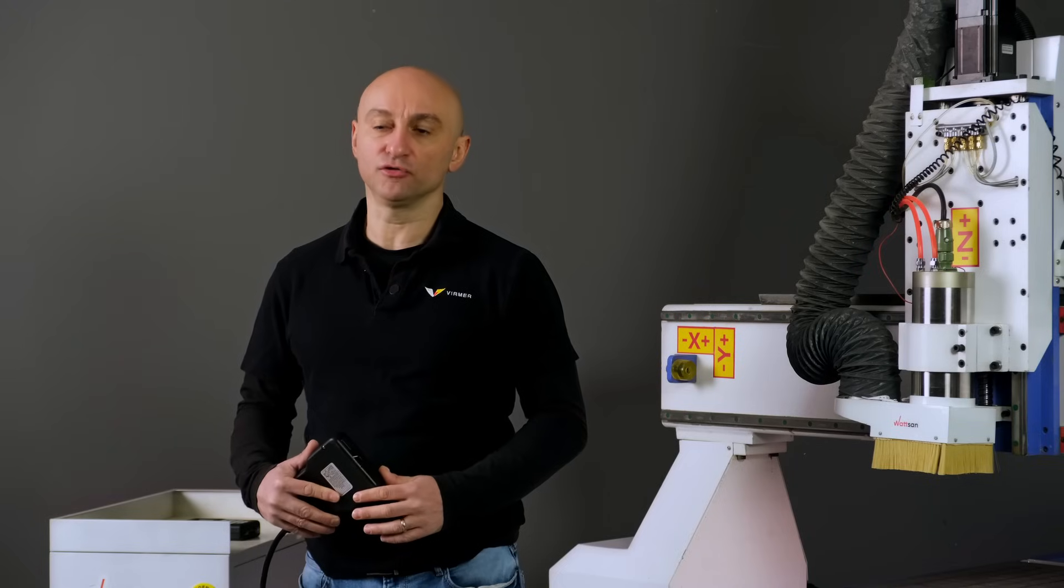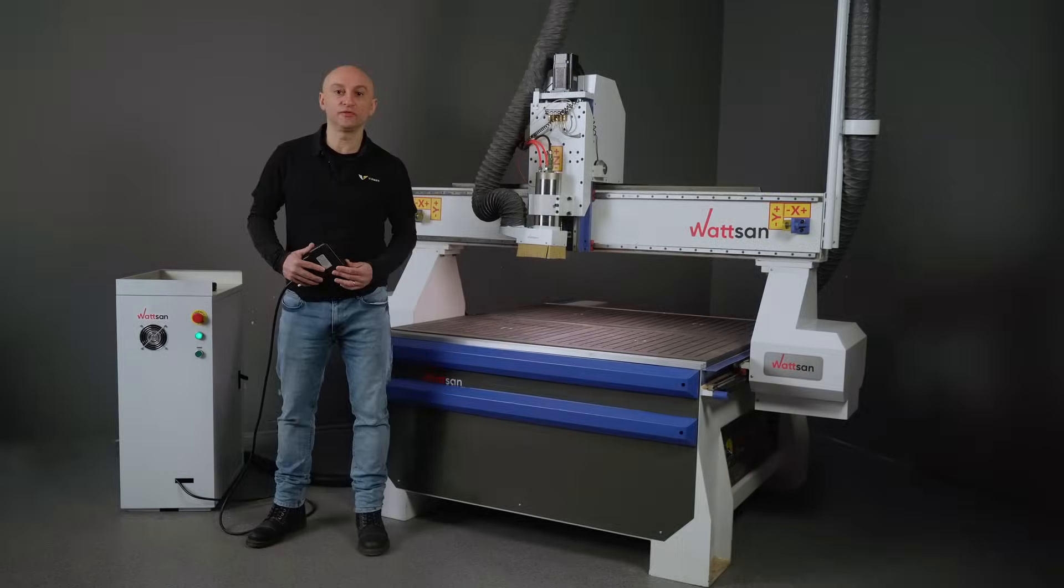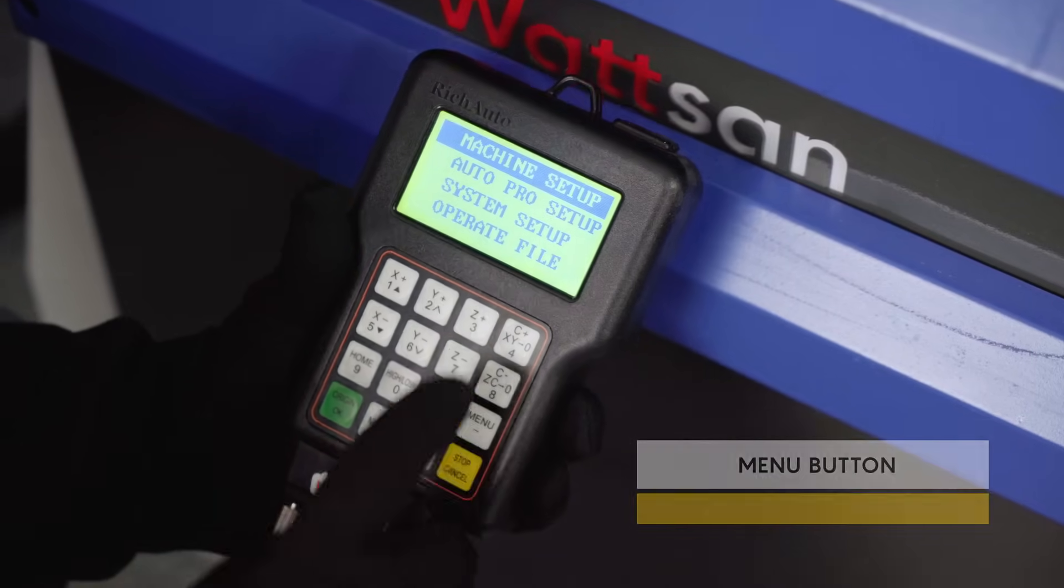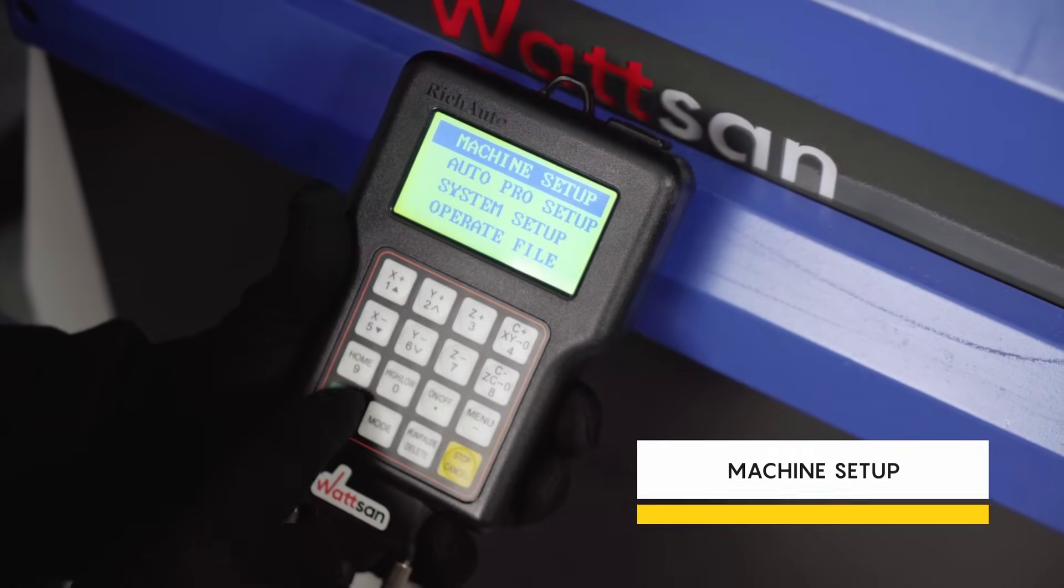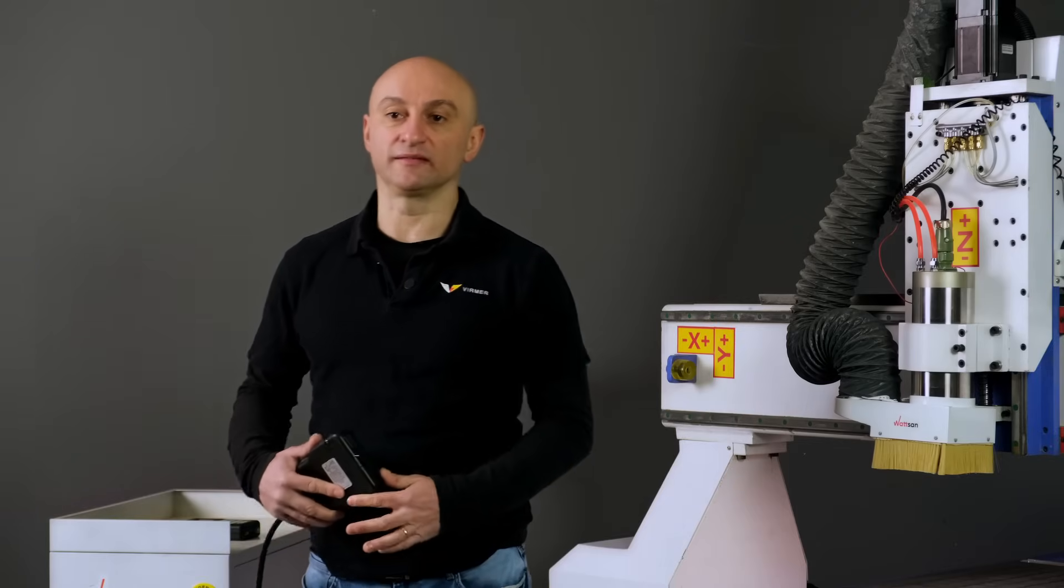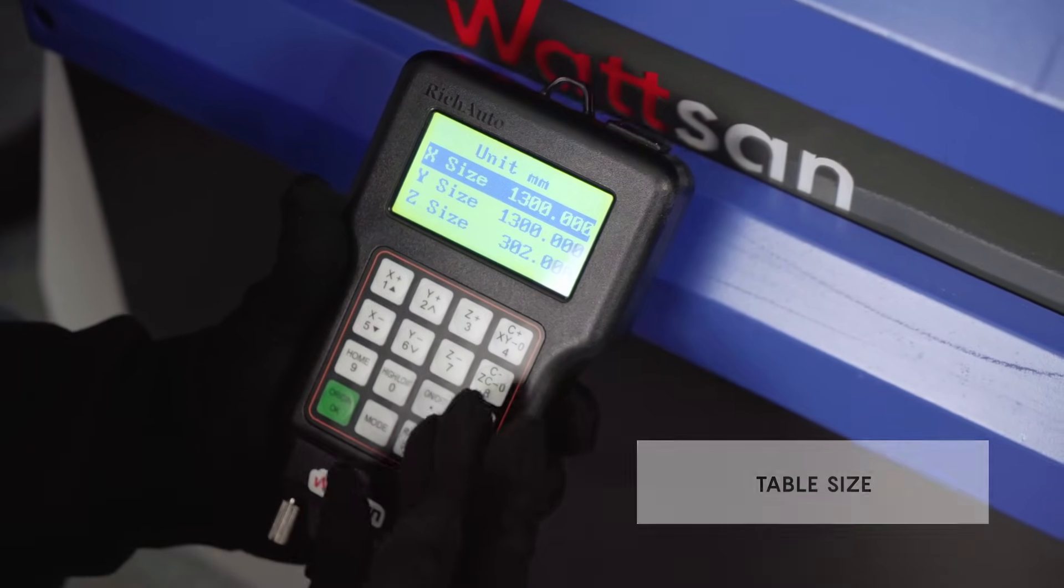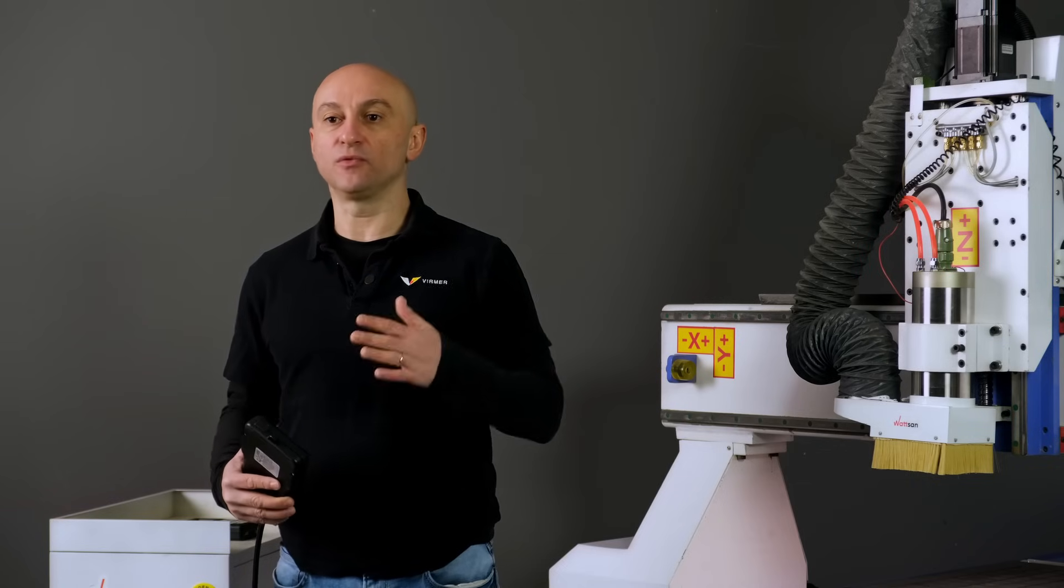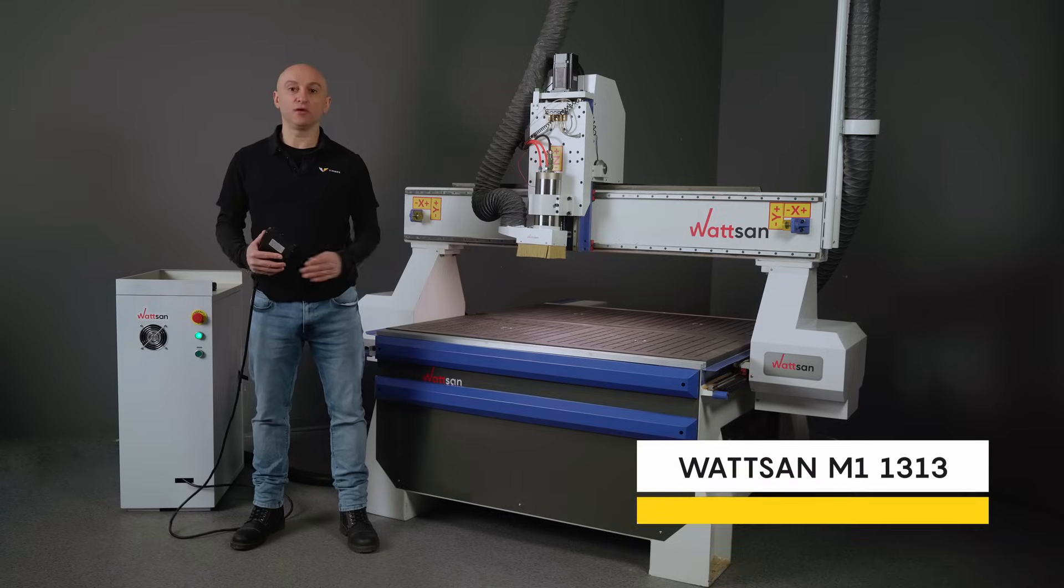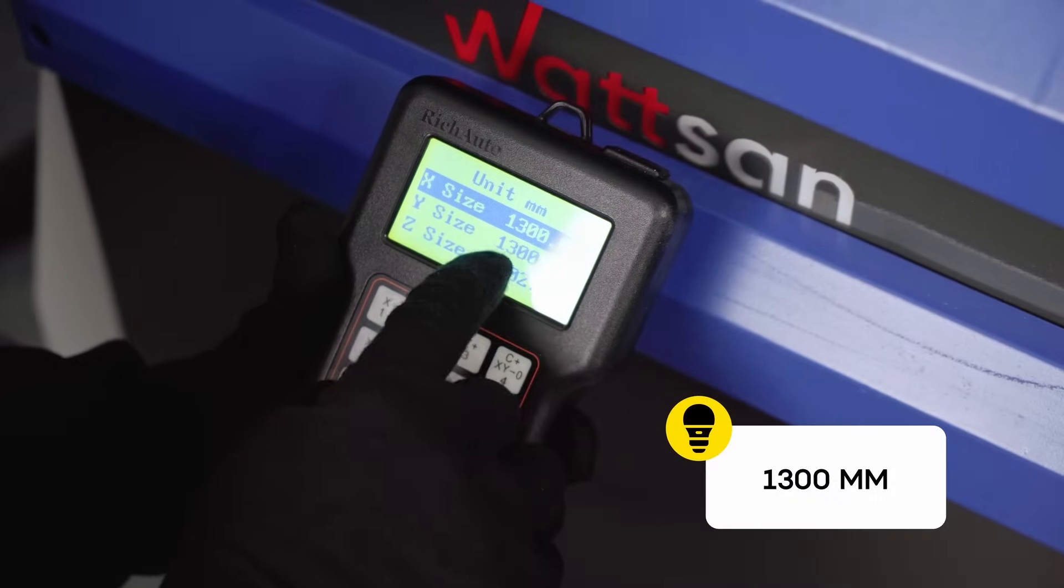Let's try to use a controller to set the CNC router machine. Push the Menu button and choose Machine Setup. There will be 11 submenus; right now we will need only six of them. Table Size: the program will automatically set the X axis to refer to. Let's set the right number according to our model. We have here a Watson M1313, so we need to enter 1300 millimeters and click Origin OK as confirmation.